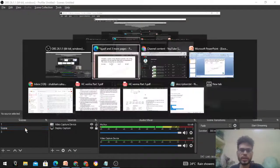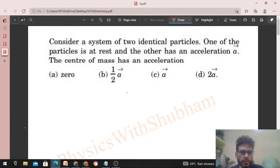Okay hi everyone, so today let's discuss this interesting problem. It says consider a system of two identical particles. One of the particles is at rest and the other has an acceleration a. The center of mass has an acceleration.